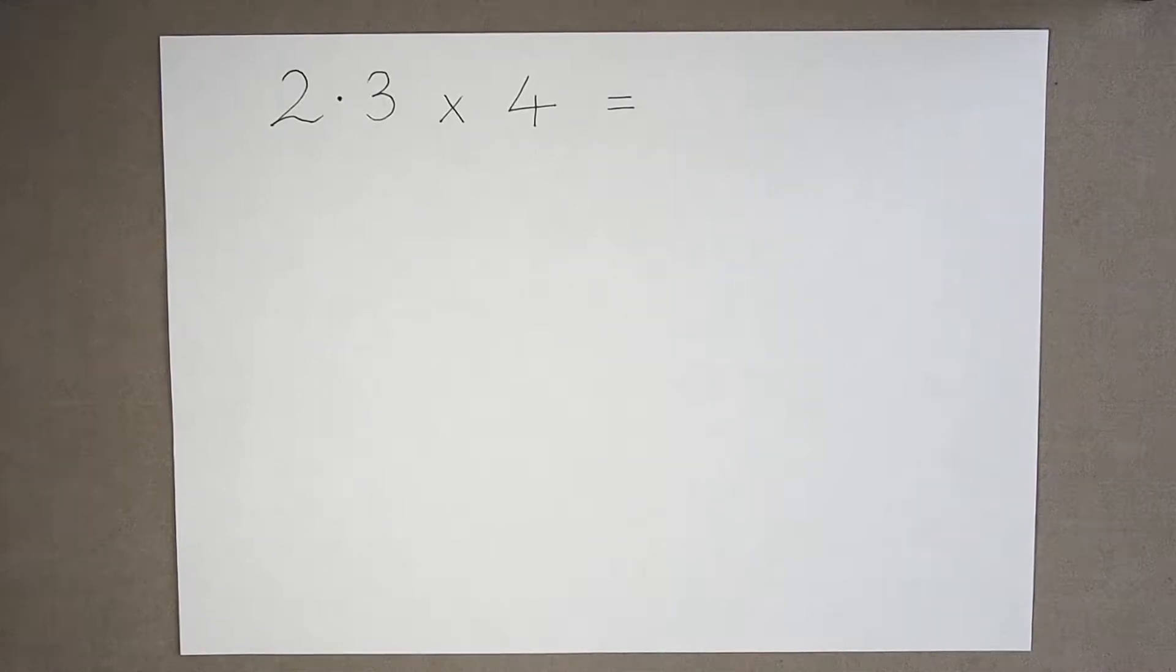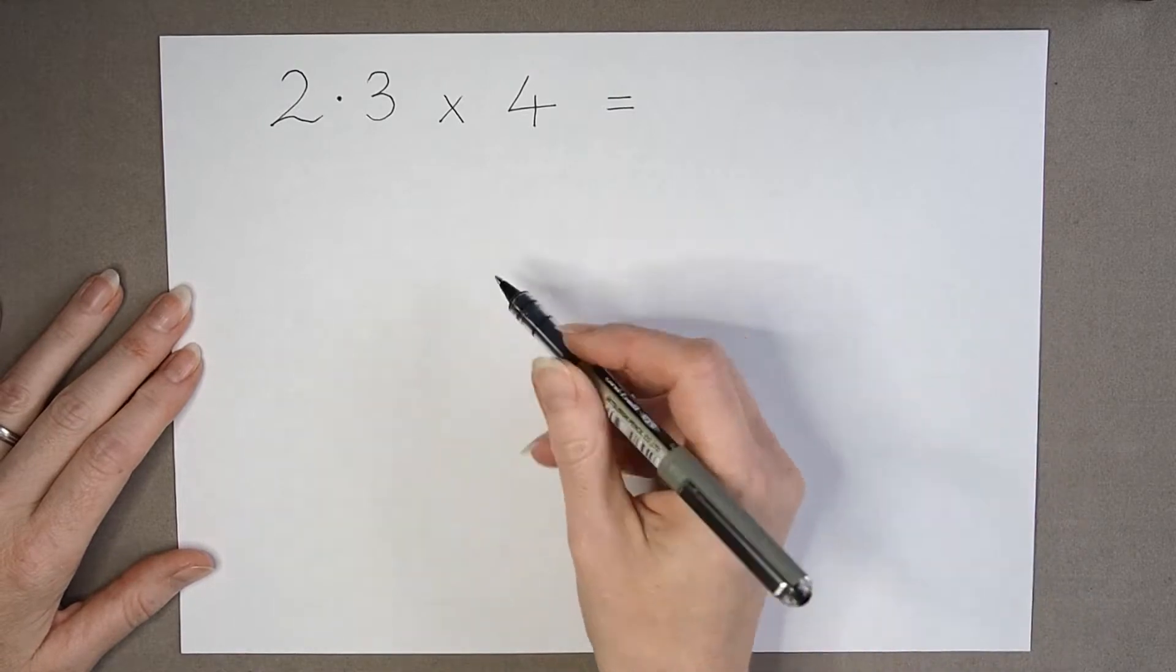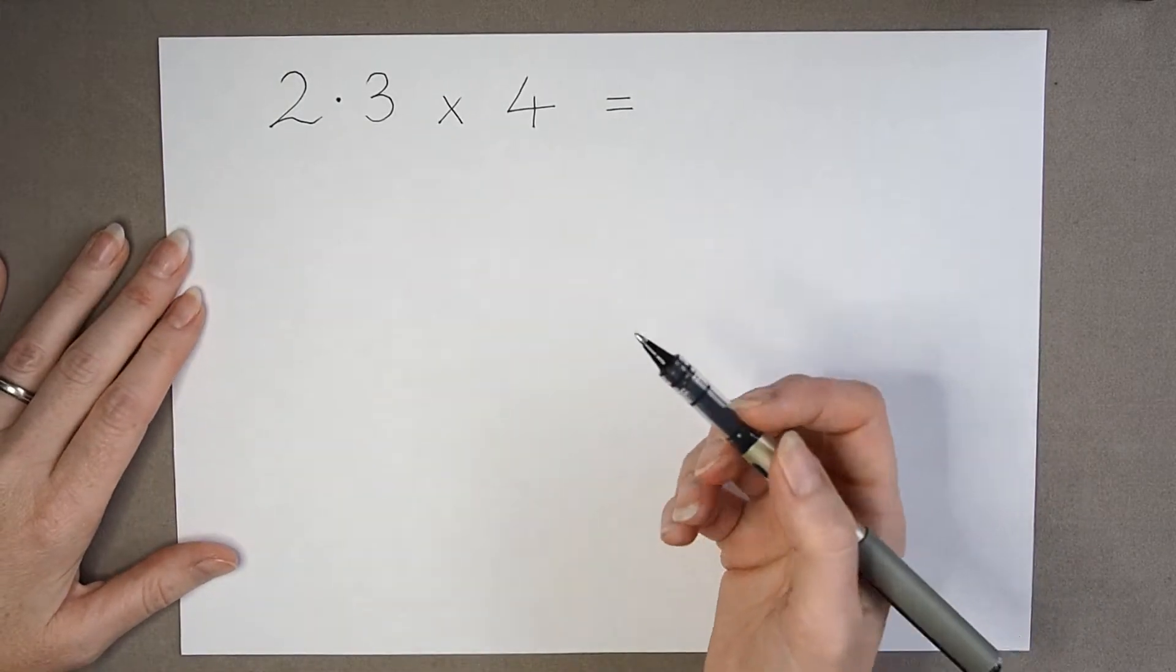We can use the column method to multiply decimals quite easily. We set the numbers out in the same way as if we were using whole numbers.